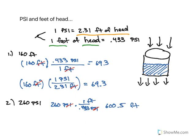Or you can do the same thing using the other conversion: 260 PSI times 2.31 feet over one PSI. Again, the PSI's cancel out. 260 times 2.31 equals, in this case, 600.6 feet of head.